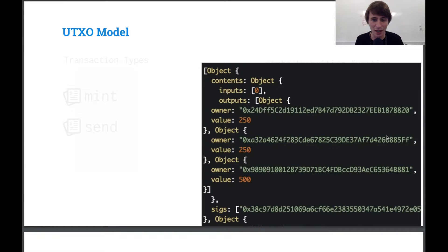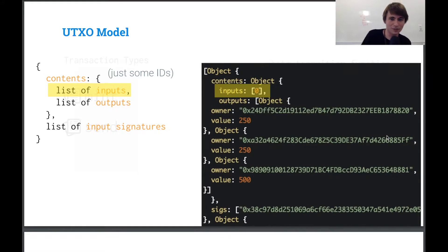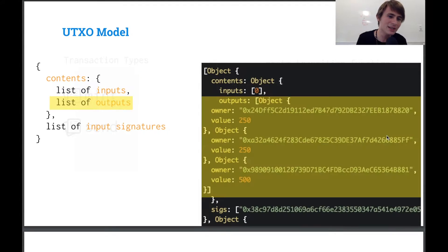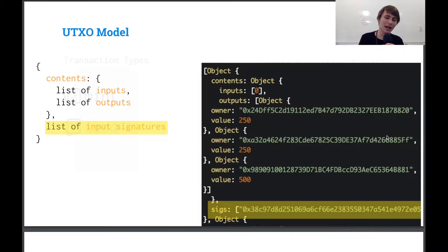First, we have a list of inputs, and a list of outputs, and a list of input signatures. So we can just check. We got this, you know, here's the inputs. It's just some IDs. We have our outputs. These are the kind of transaction outputs that are in the name UTXO, and they have an owner and a value, and we have a bunch of signatures which correspond to these inputs.